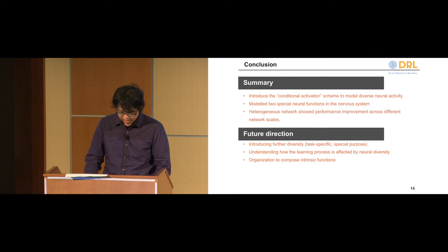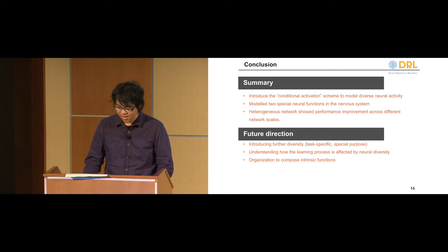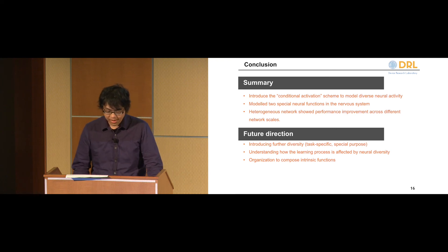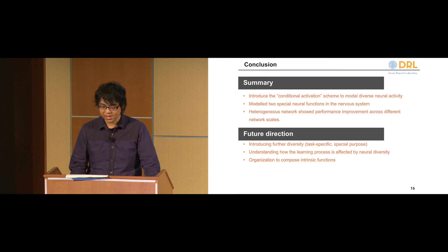In summary, we introduced a scheme for modeling diverse neural activity with particular focus on dynamically modifying the neuron's activation function. Using this scheme, we modeled two special neurons: the synchronous detection neuron in the cochlear nucleus, and the max neuron in the visual pathway. Using these two neurons to create a heterogeneous network, we showed performance improvement across several different scales, demonstrating the role of diversity in neural networks.